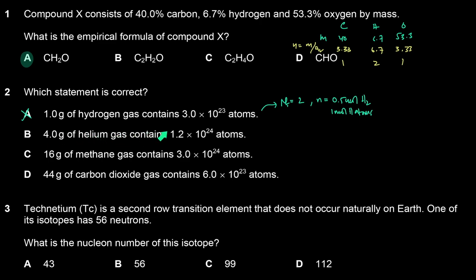4 grams of helium gas contains 1.2×10²⁴ atoms. If you look at helium, a molecule of helium is just He, and the MR is equal to 4. So if I have 4 grams, the number of moles is 1 mole. And 1 mole of helium gas is just 6×10²³ atoms. So the answer is not D either.